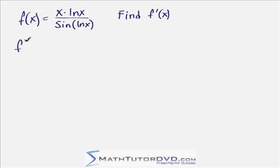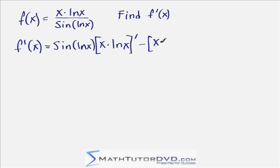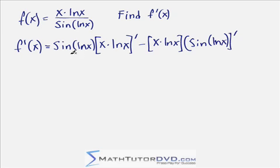So the derivative of this function is going to equal — big picture — bottom, which is sine of natural log of x, times the derivative of the top. Here's the thing where you can get into trouble: if you try to take this derivative now, you're going to get lost. So I always do it like this when it gets complicated — I just put a little prime there. So it's bottom times the derivative of the numerator, minus the top, which I'll write in brackets as x times natural log of x, minus the top times the derivative of the bottom. So I've got sine of natural log of x, and I'm going to take the derivative of that.